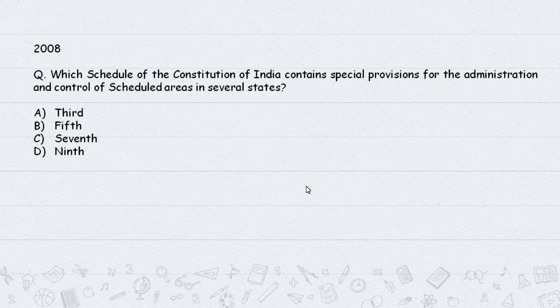Answer: The Fifth and Sixth Schedules protect the interests of Scheduled Tribes. The Third Schedule covers affirmations; the Fifth Schedule covers scheduled areas; the Seventh Schedule covers federal provisions (Union List, State List, Concurrent List).